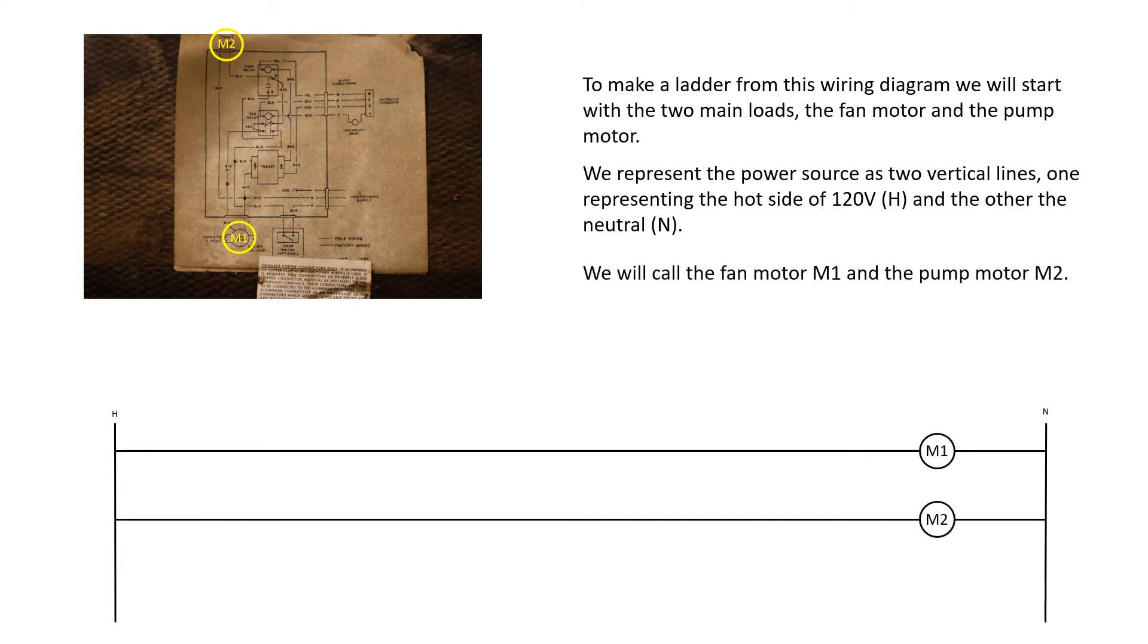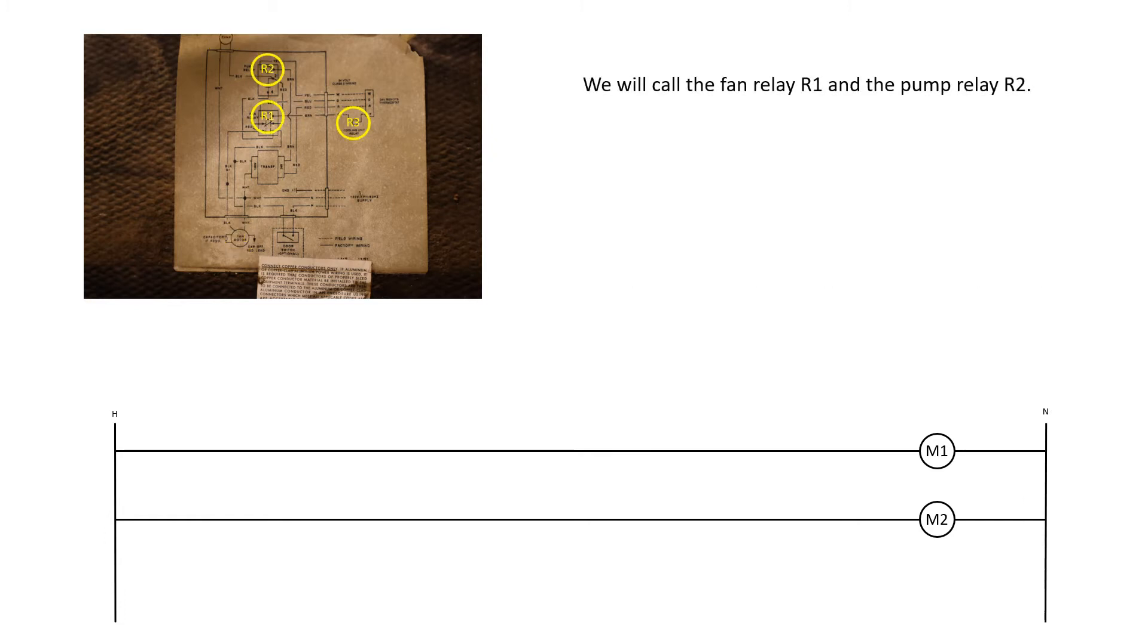We will call the fan motor M1 and the pump motor M2. We will call the fan relay R1 and the pump relay R2. The contact points for relays are shown as two short vertical lines. The thermostat relay will be R3.